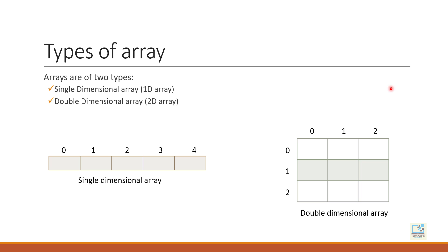Next is the types of array. There are two types: single dimensional array, also known as 1D array, and double dimensional array, also known as 2D array. The explanation of double dimensional array I have already given in a different video — you can go to my channel and hit the Standard 10 playlist. In this video, I am only going to discuss the single dimensional array, which is also known as 1D array.